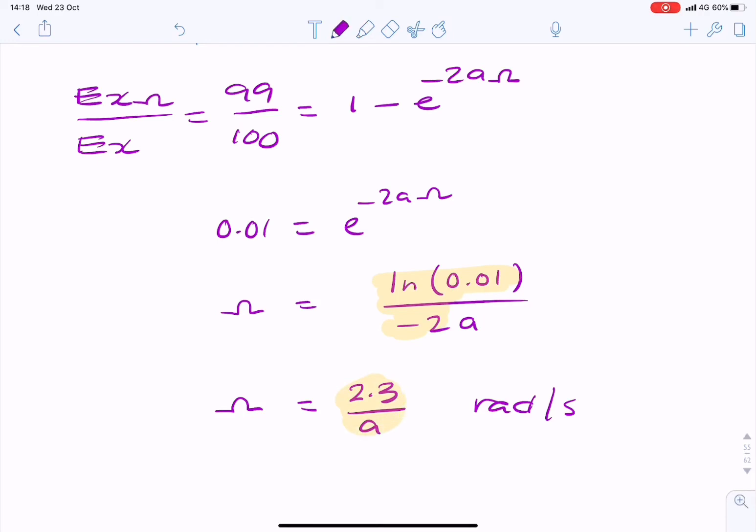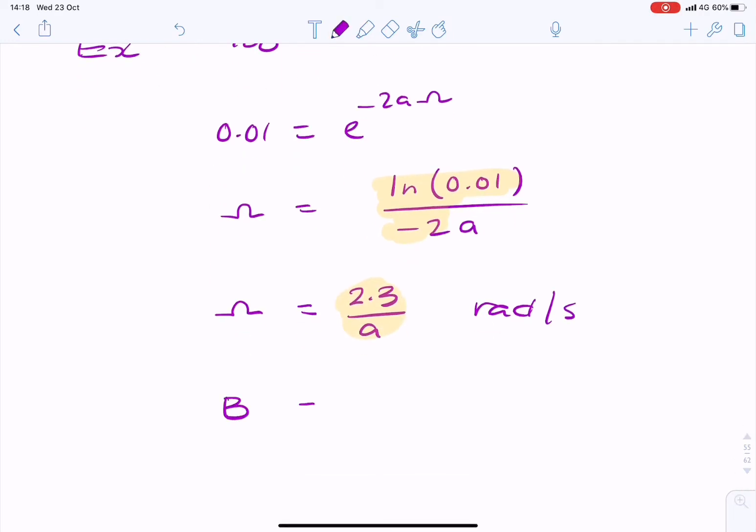So it's 2.3 over a radians per second. And that is my final answer, unless I want to find the answer in hertz. In which case, I would divide by 2π. And that would give me 0.37 over a hertz.